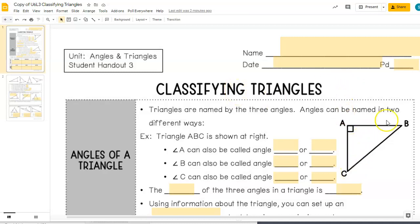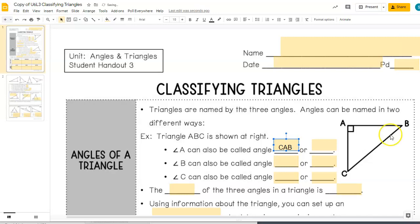Obviously triangles have different angles in them, and we're going to be focusing on different ways of classifying triangles. Now triangles are named by the three angles. Angles can be named in two different ways. So if we look at this triangle ABC, it's shown at the right. Angle A can be called CAB or BAC, or we could refer to it as angle A. Angle B can also be called ABC or CBA. Angle C can be ACB or BCA.